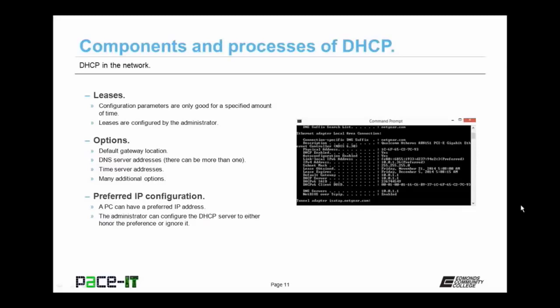There are also options that the administrator can configure. The first obvious one is the default gateway location. There's also the DNS server address — the administrator can configure more than one DNS server location. An administrator can also configure an option for the PC to synchronize with a time server, so the administrator can configure a time server address. There are many more additional options, but those are the big three you should remember.